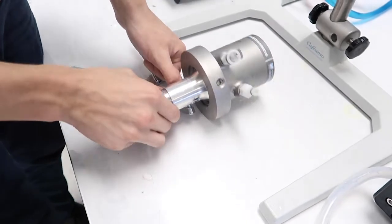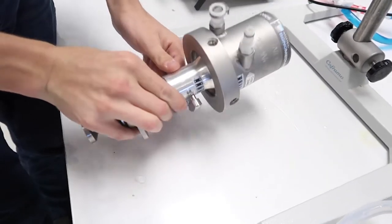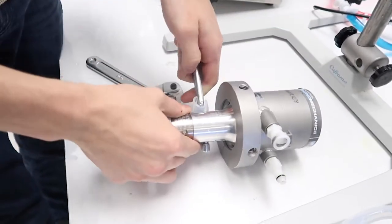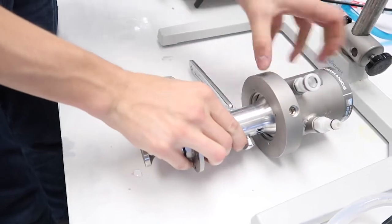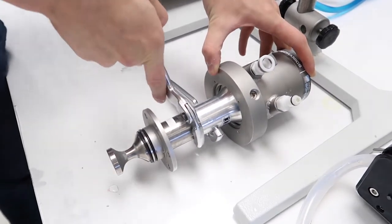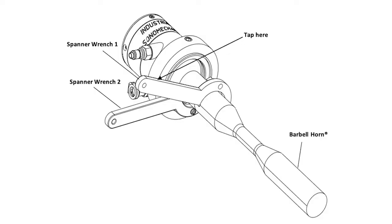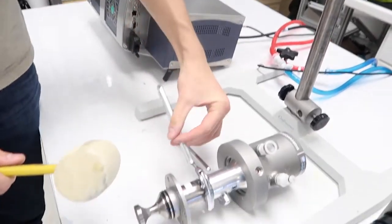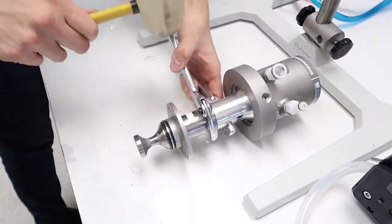Insert the pin of the first spanner wrench into a hole in the transducer's front mass. Hold the wrench against the workbench to prevent counterclockwise rotation. Insert the pin of the second spanner wrench into a hole in the barbell horn's input end, set it up to provide counterclockwise torque. Tap the handle of the second spanner wrench with a rubber mallet to generate counterclockwise torque.